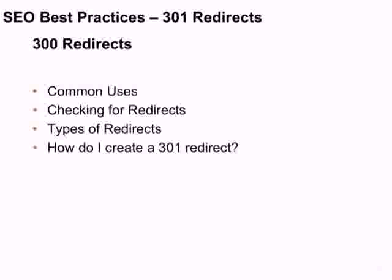The next tool I want to discuss in keeping that site index lean and clean is a 301 redirect. Redirects are used to tell the search engines where your content was and that you've moved it. There are several types of 300 redirects, but you really only need to know the 301 redirect. We'll talk about common uses, the types of redirects to avoid, and how to create a 301 redirect on different platforms.